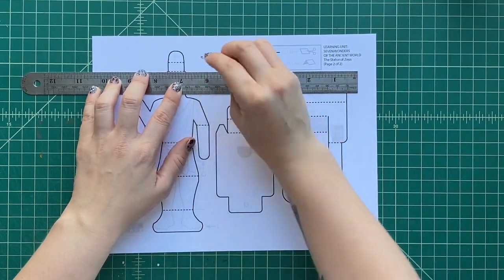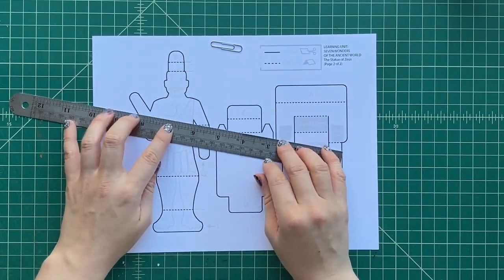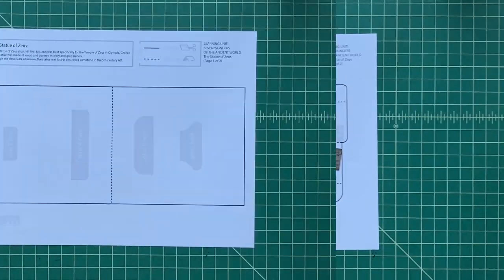Now, this pop-up uses a lot of what are called layers. Layers are super easy. They're also called box layers. They're super easy to use.